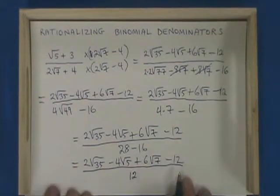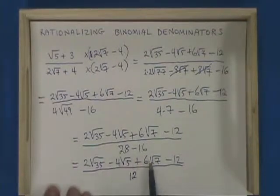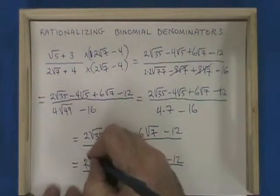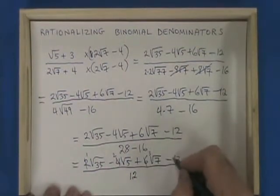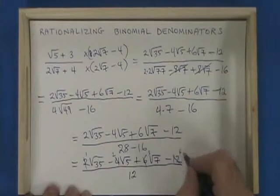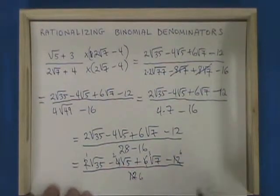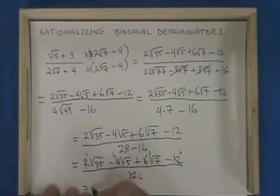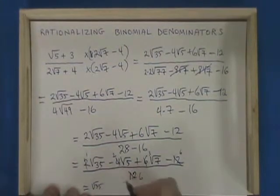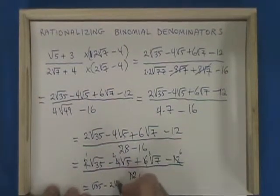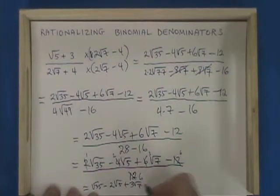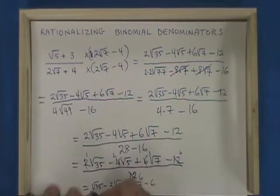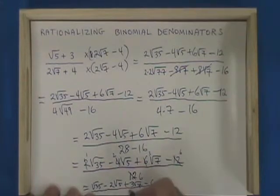And there's one thing left to do. The 2, the 4, the 6, the negative 12, and this 12 have a common factor of 2, so I can cancel out a 2. That leaves a 1 here, a 2 there, a 3 here, a 6 there, and a 6 down here. Our final answer will be root 35 minus 2 root 5 plus 3 root 7 minus 6 all over a denominator of 6.